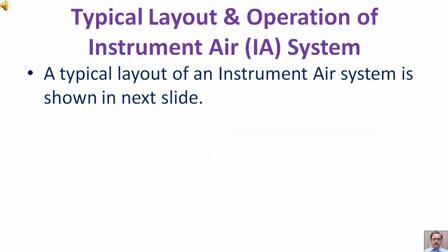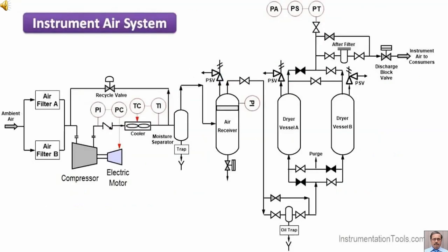A typical layout of an instrument air system is shown in the next slide. In this slide we can see that ambient air is entering at this point, then it passes through filters A and B, then it goes to the compressor.